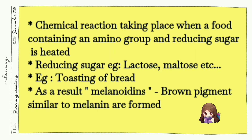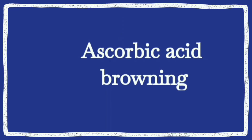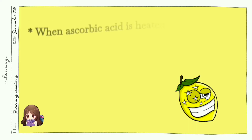A reducing sugar is a sugar with reducing properties. All monosaccharides are reducing sugars; maltose and lactose are also examples of reducing sugars. The compound formed in the Maillard reaction is called melanoidin, and it is similar to melanin, which we discussed in enzymatic browning. This compound gives the brown color.